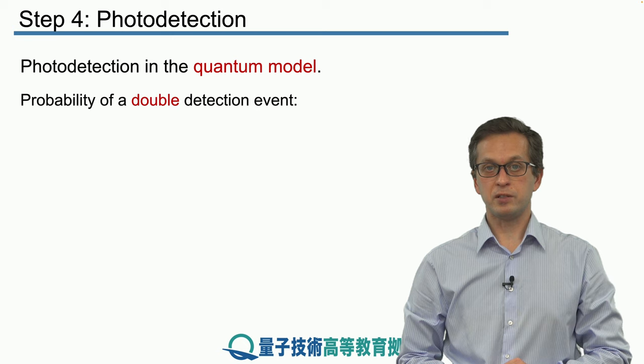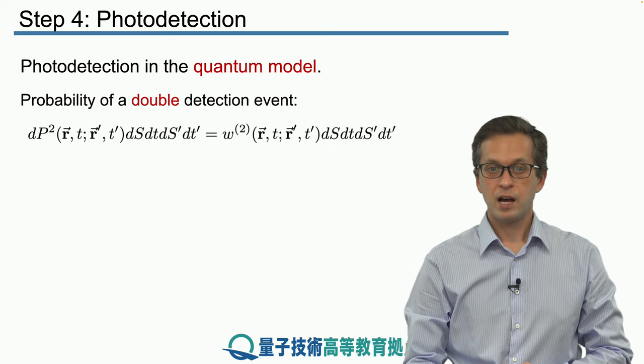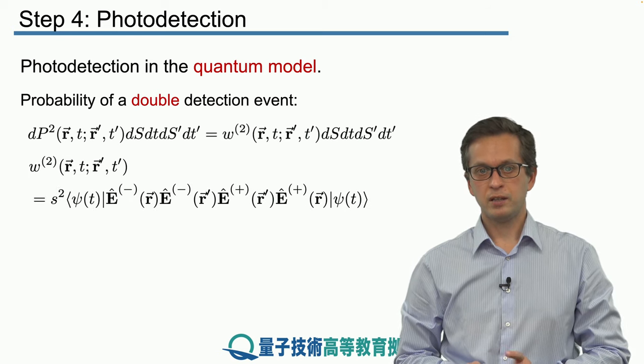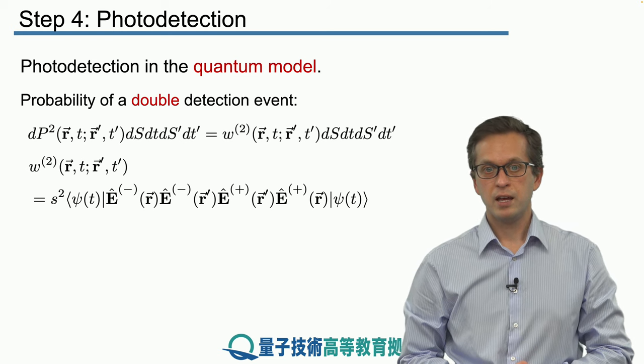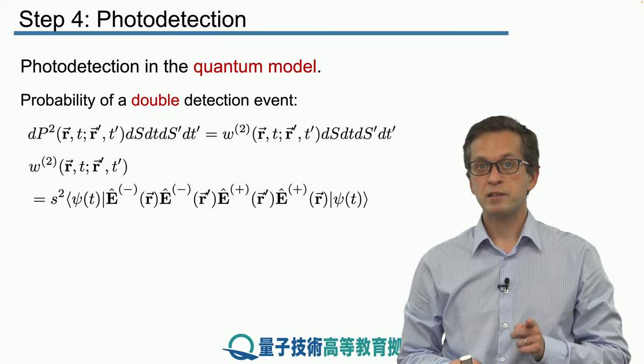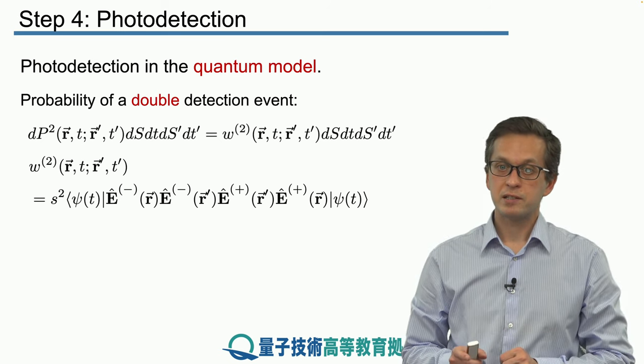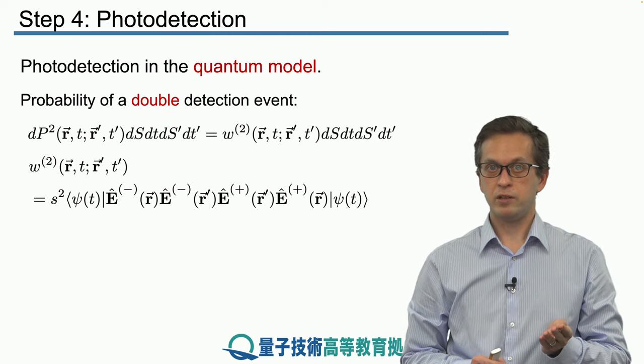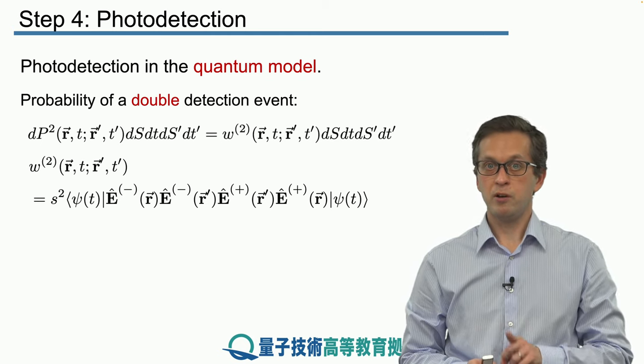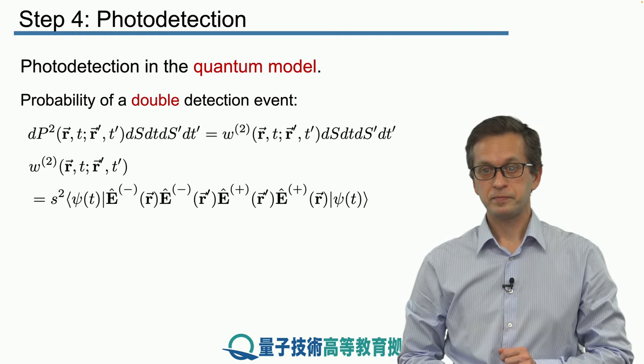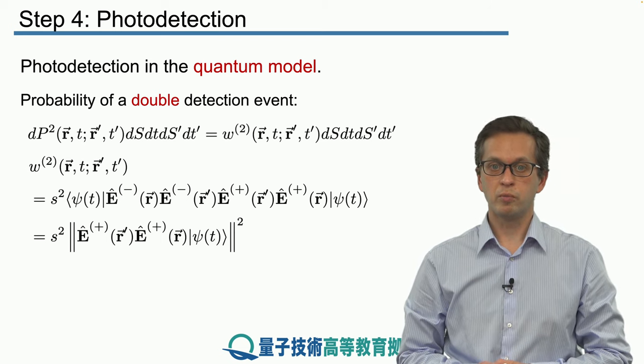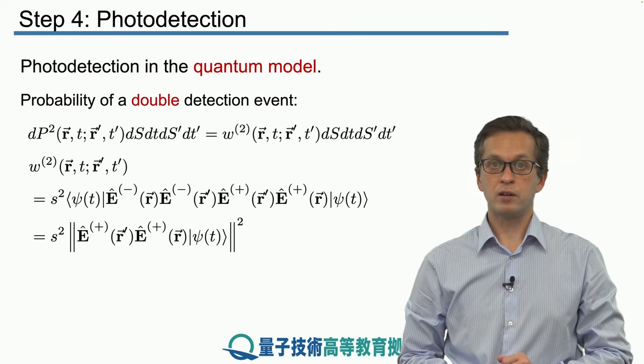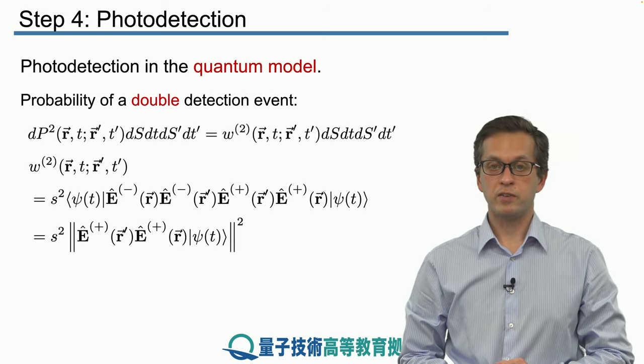So, what about the probability for the double detection event? Well, it's the following. Now, like in the semi-classical case, it's given by w^(2). How do we compute w^(2)? It's by the following quite lengthy expression. The w^(2), the photo detection rate of a double detection event, is given as s squared times the average of E^- at r times E^- at r prime times E^+ at r prime times E^+ at r. The ordering of these operators is very important. We always have minus on the left plus on the right. In other words, it's a normal ordering. We have a daggers on the left and a's on the right. And again, we will be writing it in terms of the norm of the vector. So, we will only write s squared times E^+ at r prime times E^+ at r applied to our ket psi t, which is the state of our field.